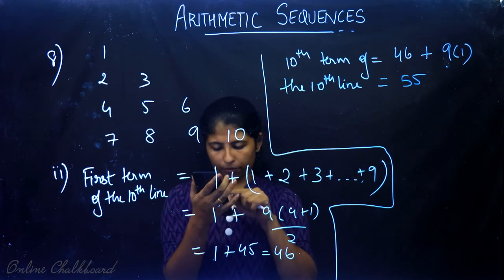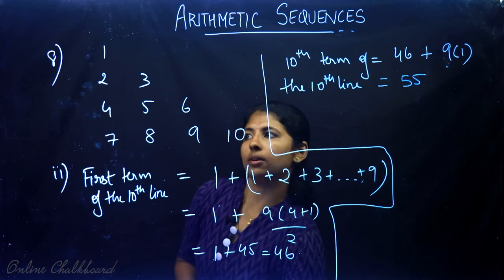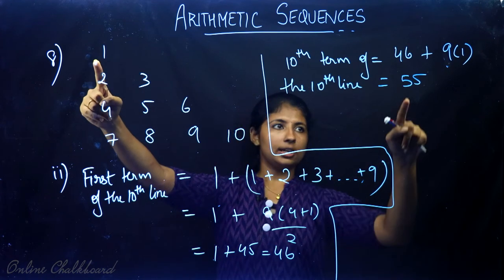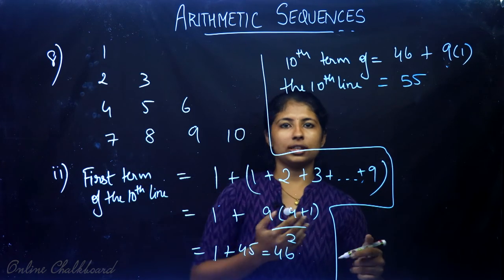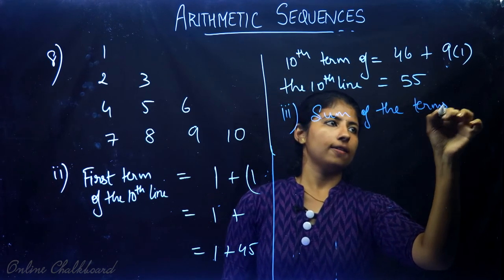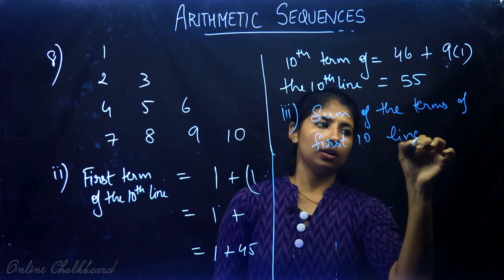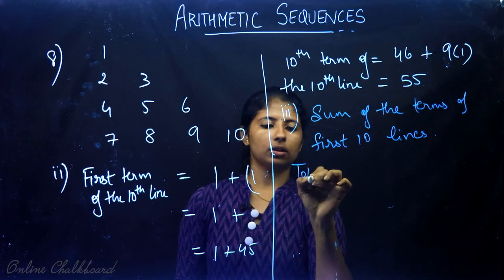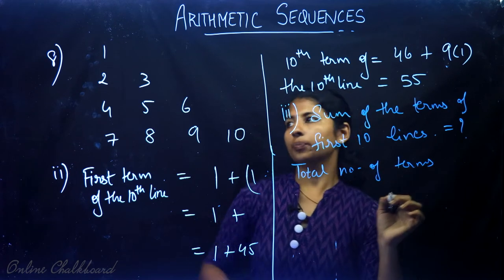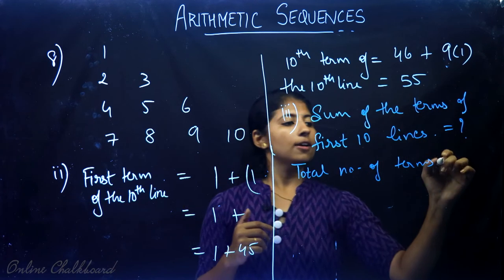Last part: Find the sum of all terms in the first ten lines. The first ten lines contain a total of 55 terms (1 plus 2 plus 3 ... plus 10 equals 55). The first term overall is 1 and the last term is 55.